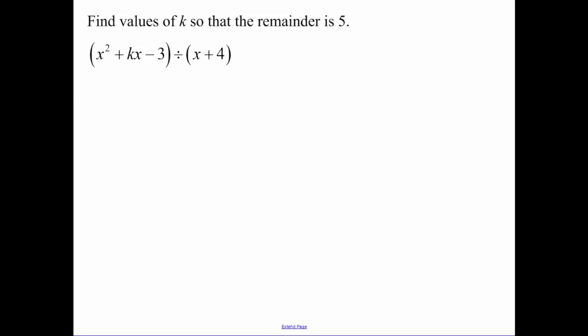Find values of k so that the remainder is 5. So I thought of synthetic substitution right away. I put x minus 4, because remember you always need to change this to x minus a negative 4, and then put my coefficients. Now we need my remainder to be 5. I bring down my 1.